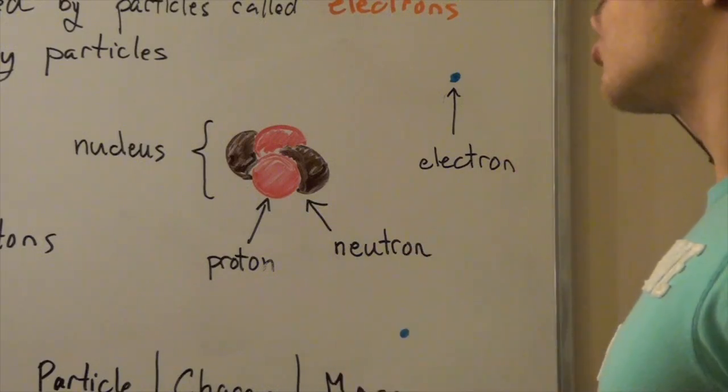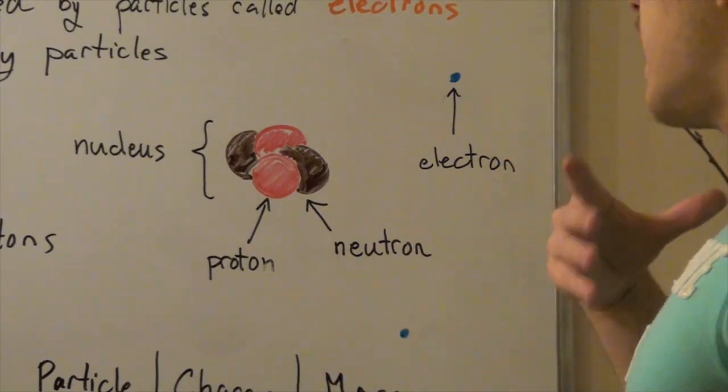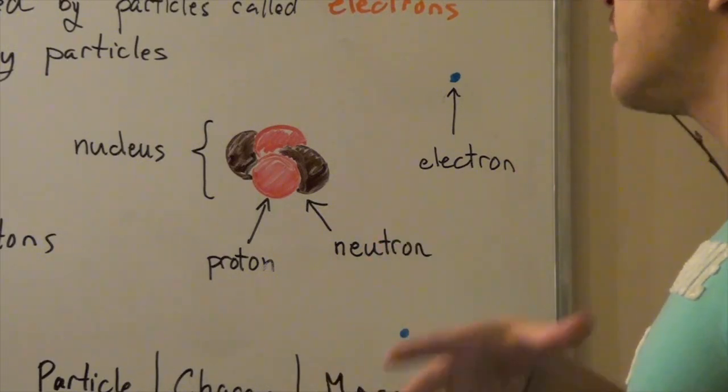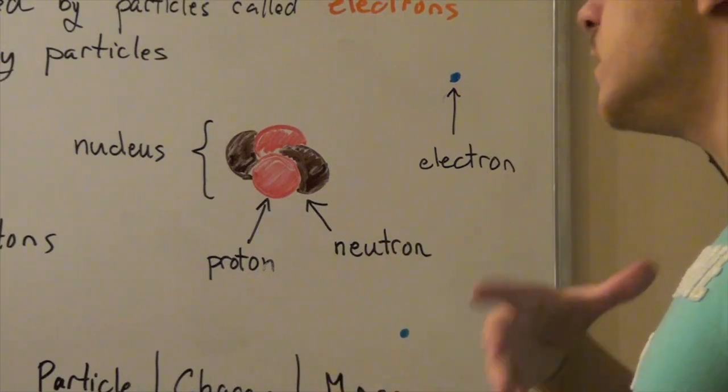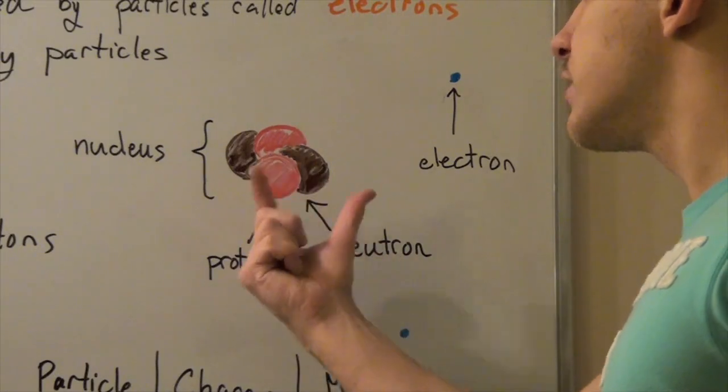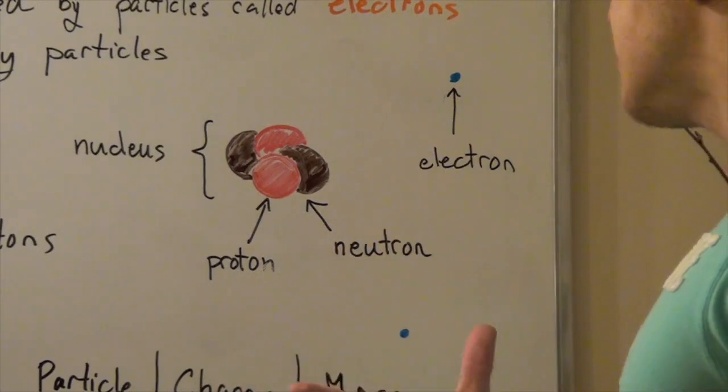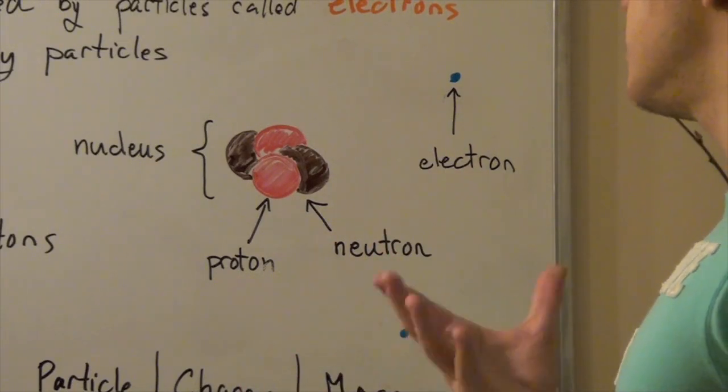And in fact, atoms are mostly composed of empty space. And in fact, if our atom was the size of a football field, our nucleus would be the size of a marble. So you can imagine that our entire atom, for the most part, is composed of empty space.